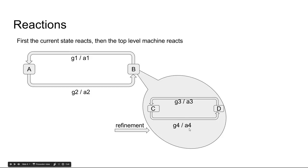And after that, the higher-level state machine reacts. It goes from B to A and produces output A1. A1 and A4 are produced at the same time.